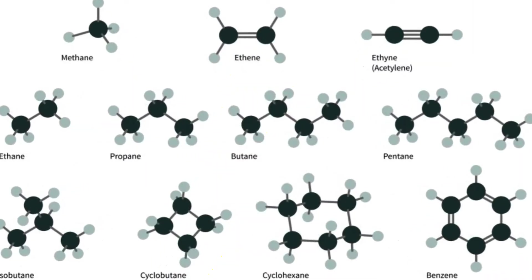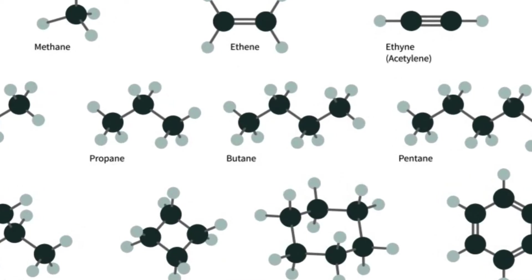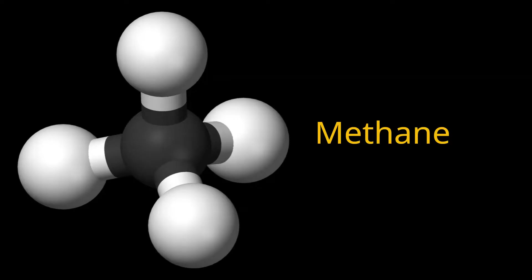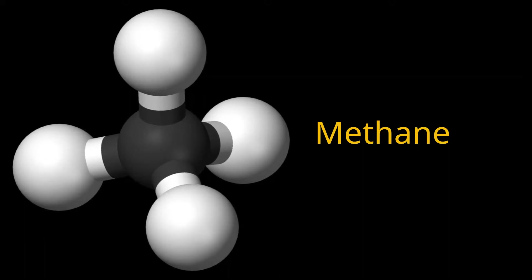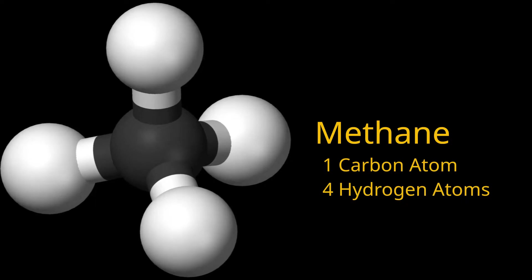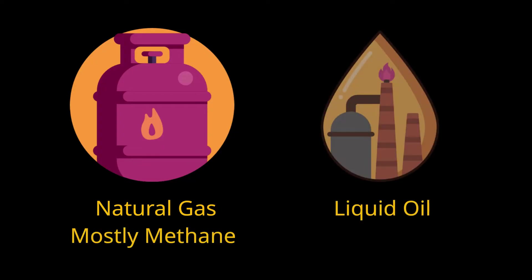Hydrocarbons are molecules that consist only of carbon and hydrogen atoms. They can have different shapes and sizes depending on how many carbon atoms they have and how they are arranged. For example, methane is the simplest hydrocarbon molecule, with one carbon atom joined to four hydrogen atoms. Hydrocarbons can occur as natural gas, which is mostly methane, or as liquid oil, which is a mixture of different hydrocarbons.